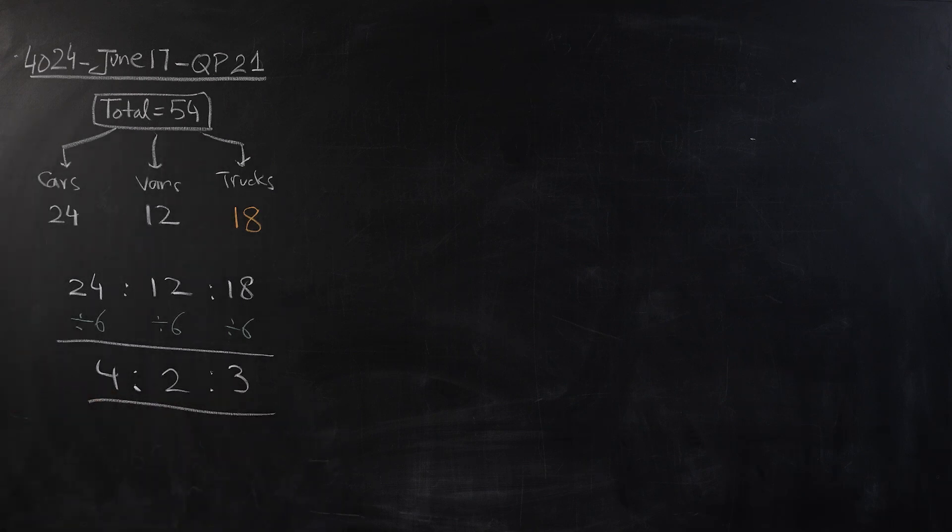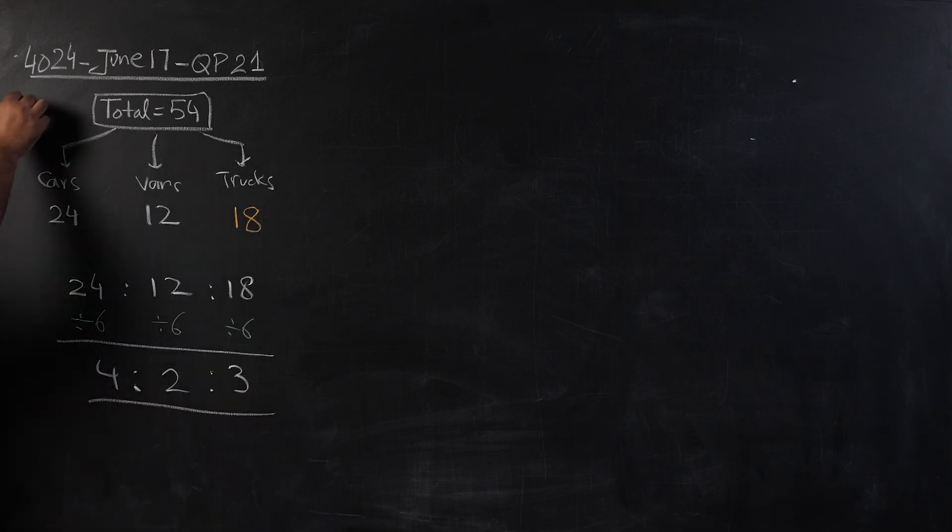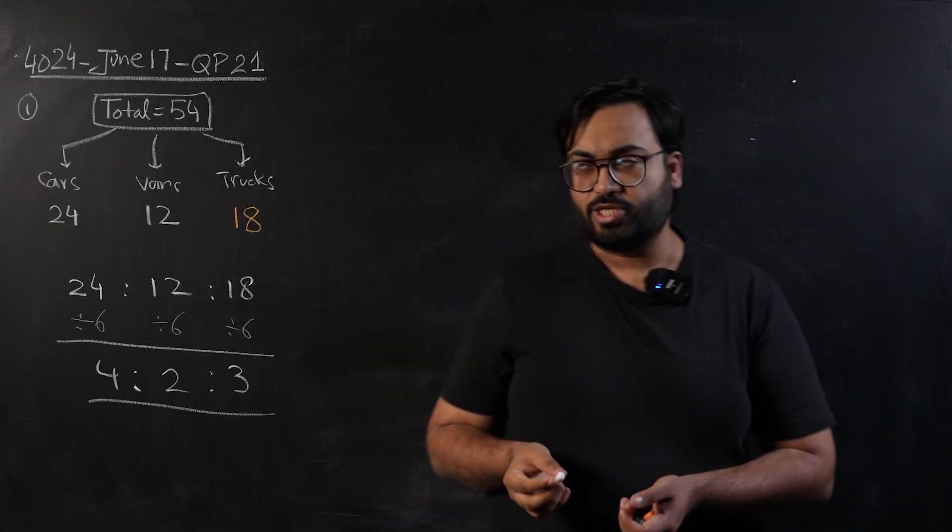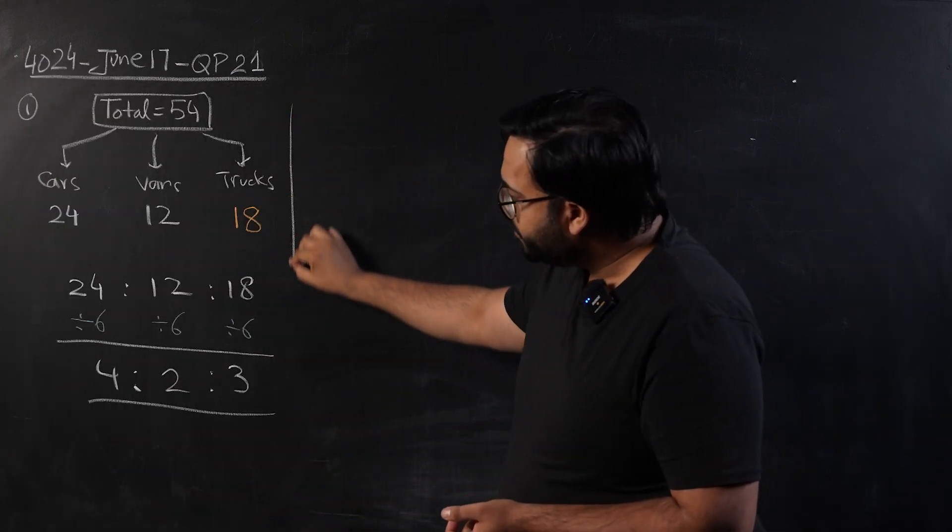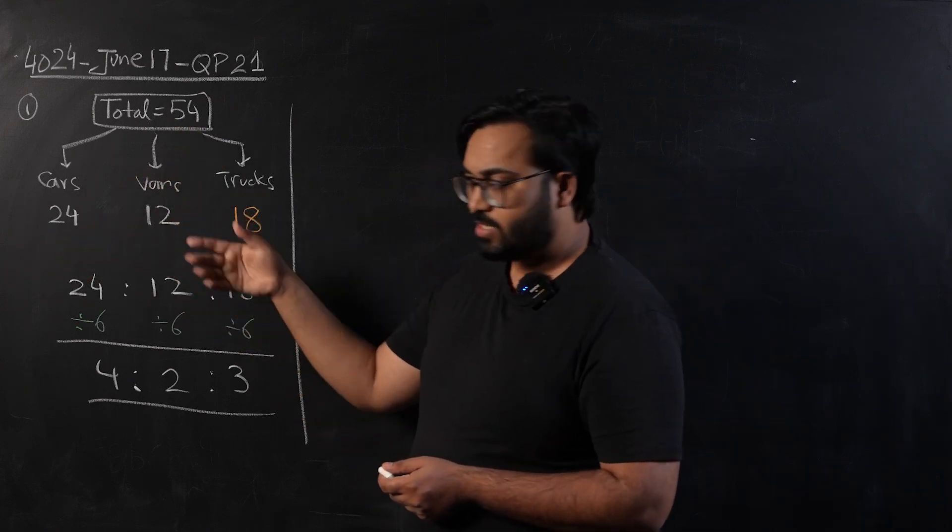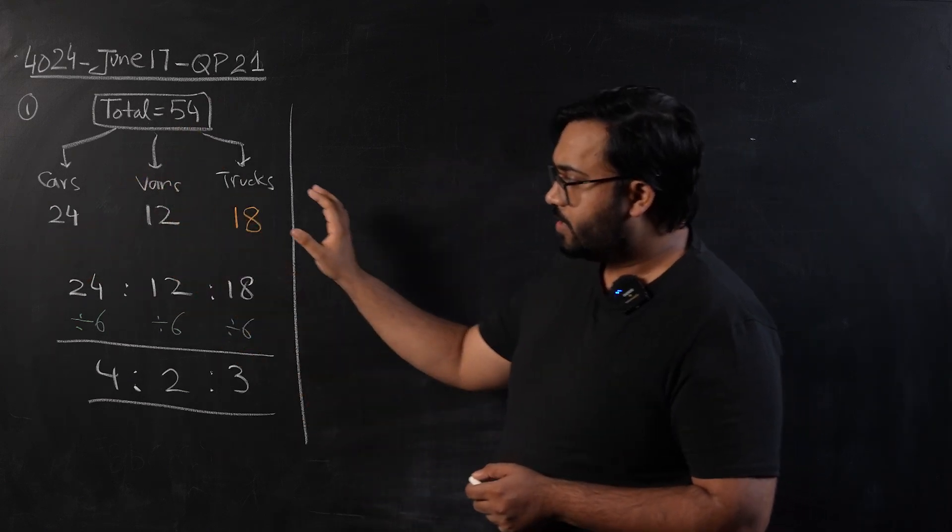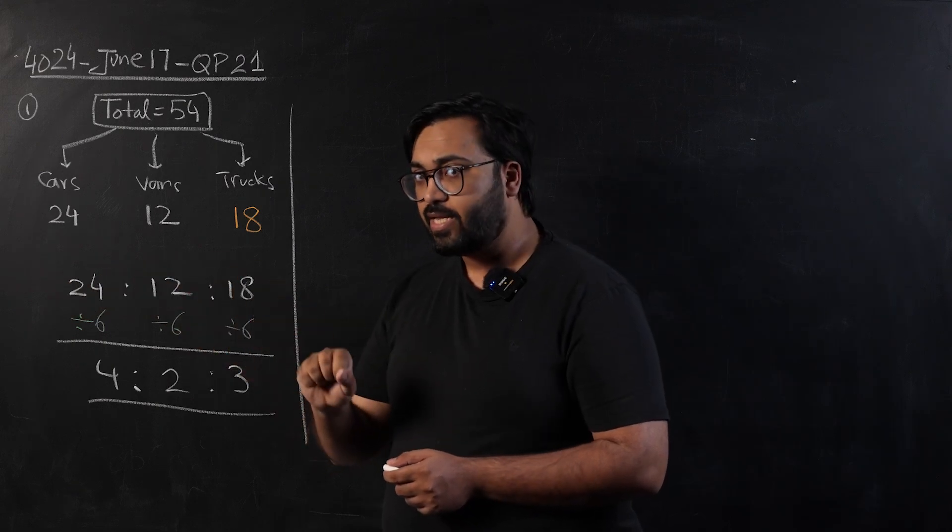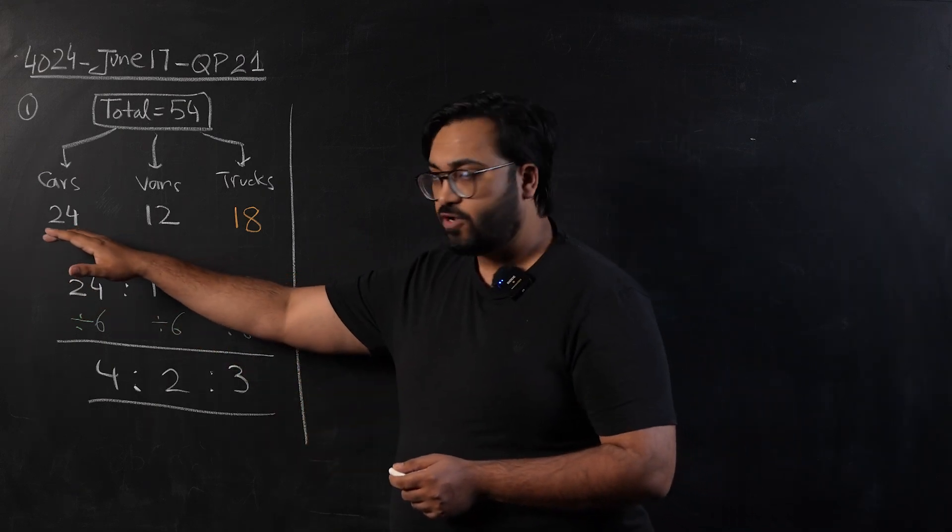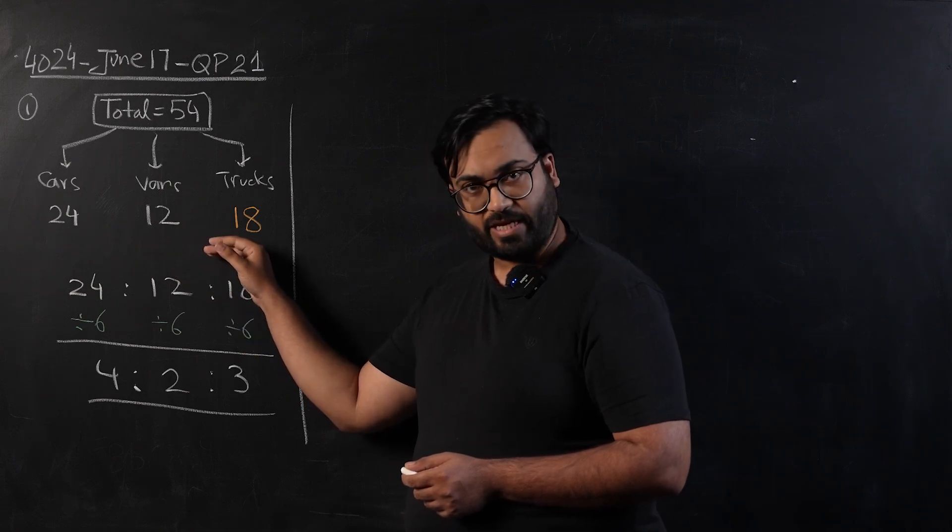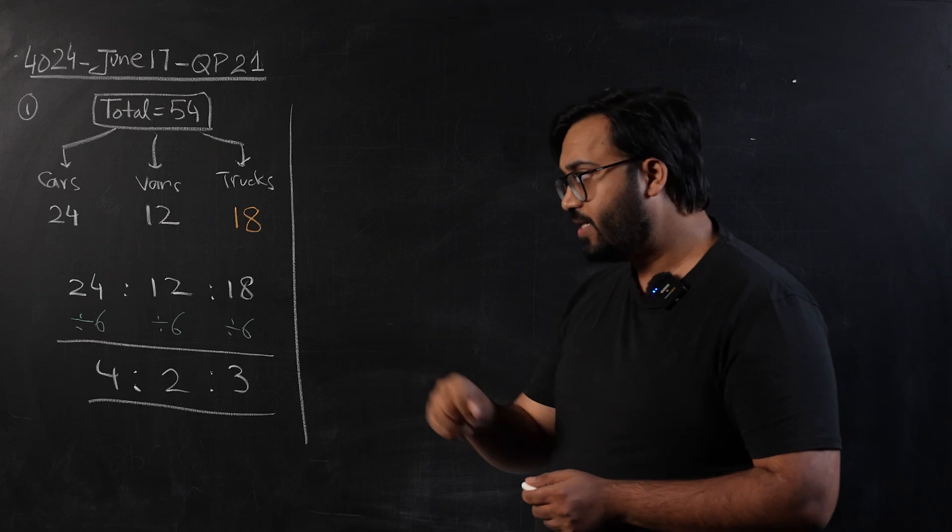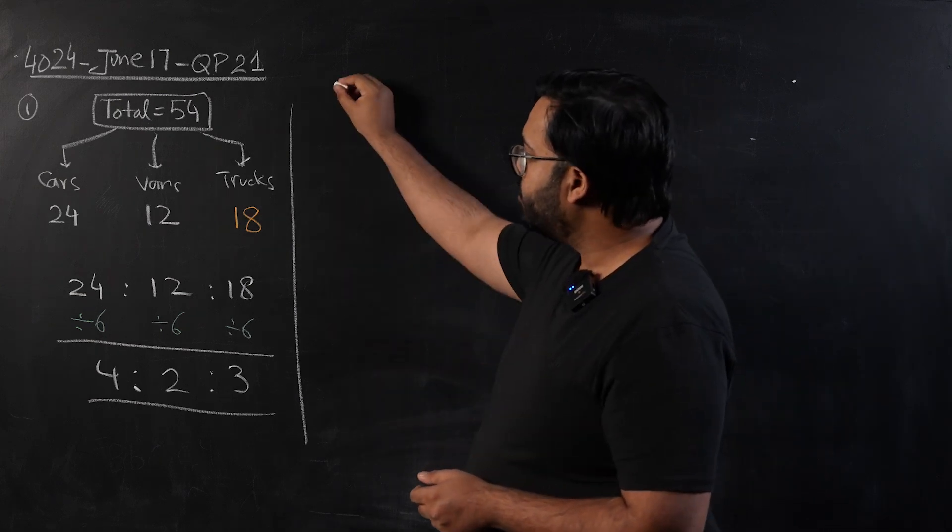We can get a simplified ratio: 24 over 6 would be 4 ratio 2 ratio 3. This is the simplified version of this ratio. This was the first part, the easier part. Now let's move on to the trickier part. Trevor is planning to reduce his collection and sell some of the toys. He wants to sell them in such a way that two conditions must be followed. First of all, he is going to sell at least one out of each of these three categories.